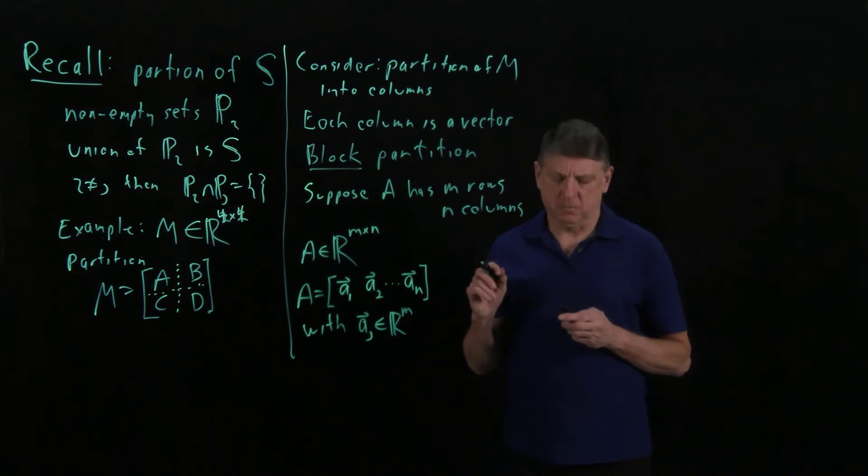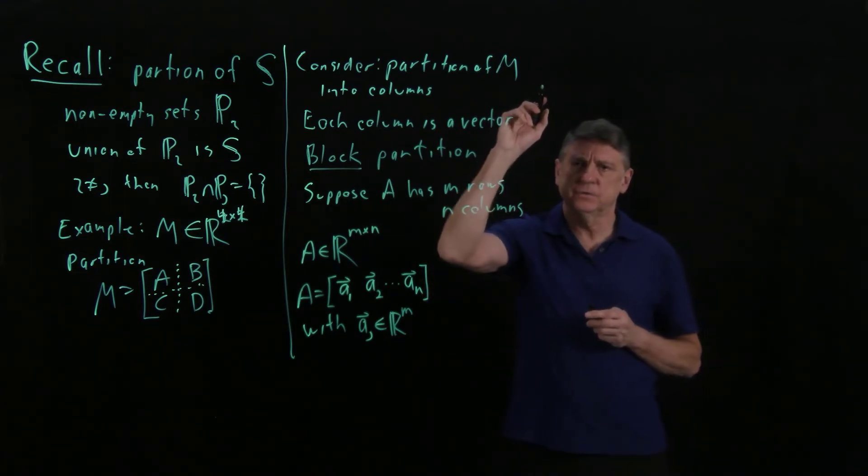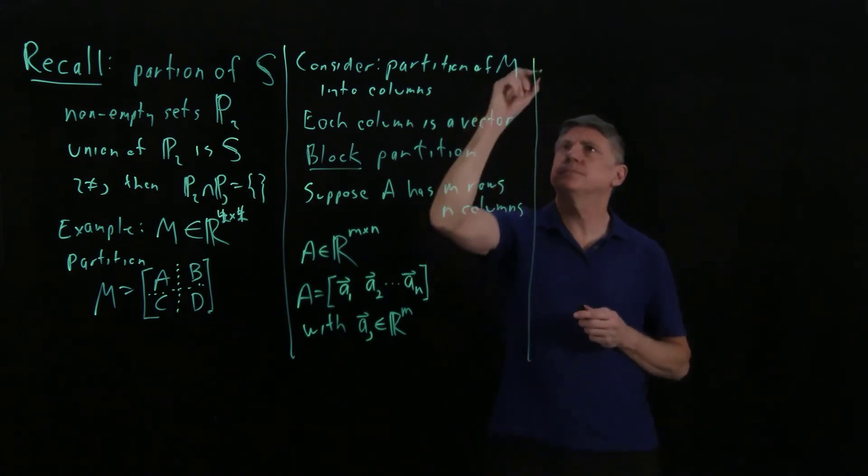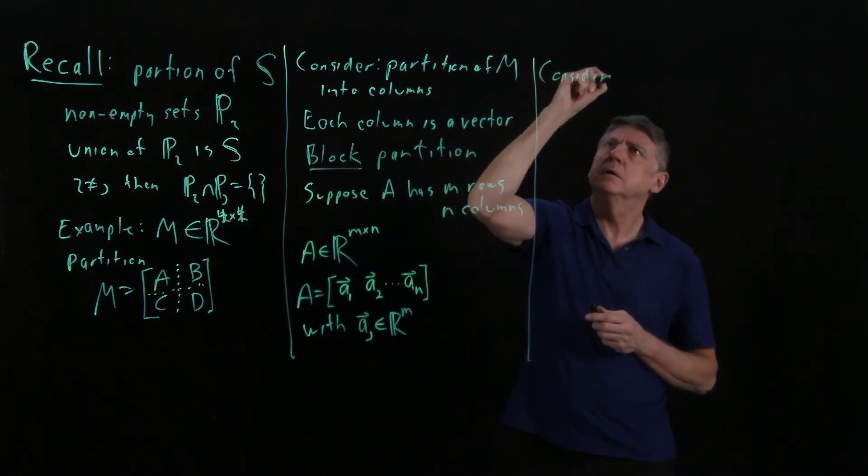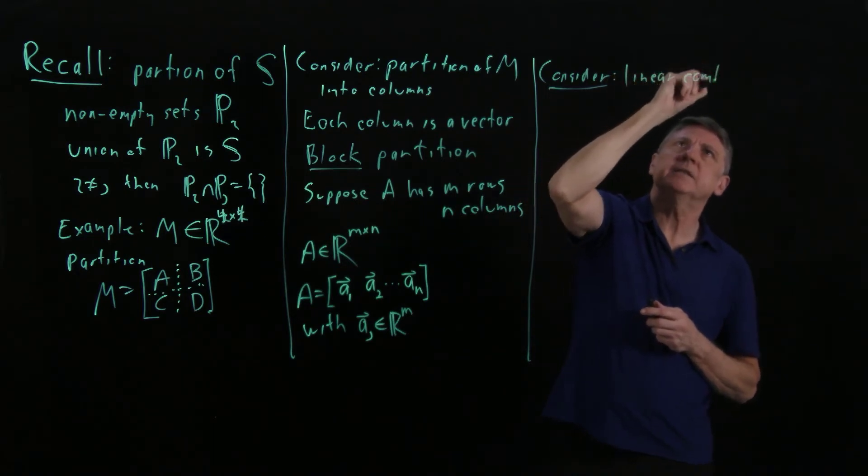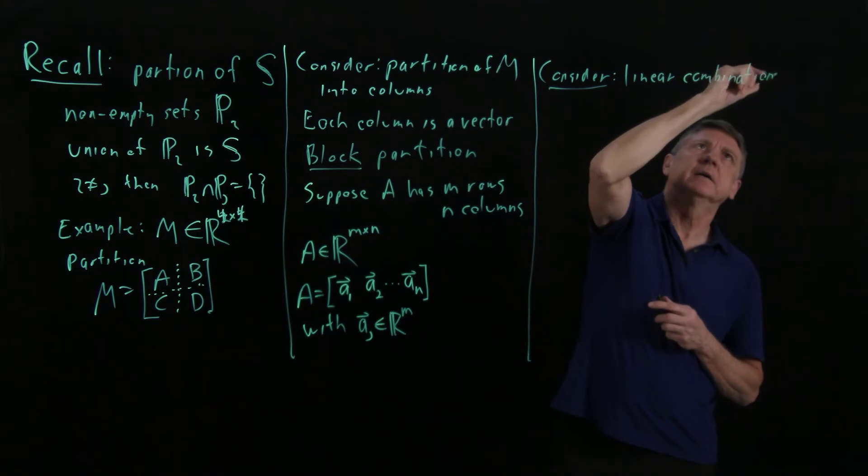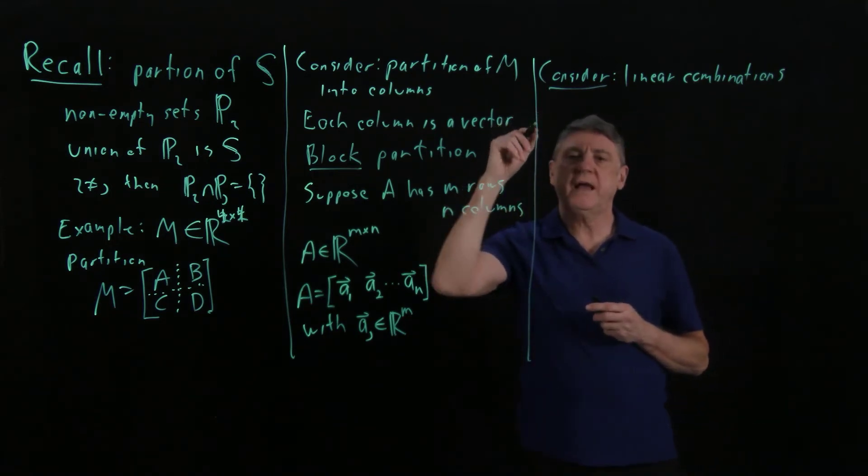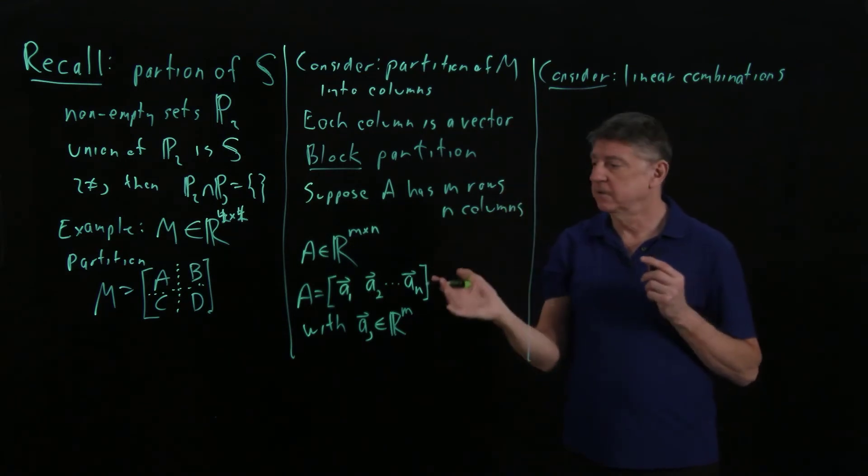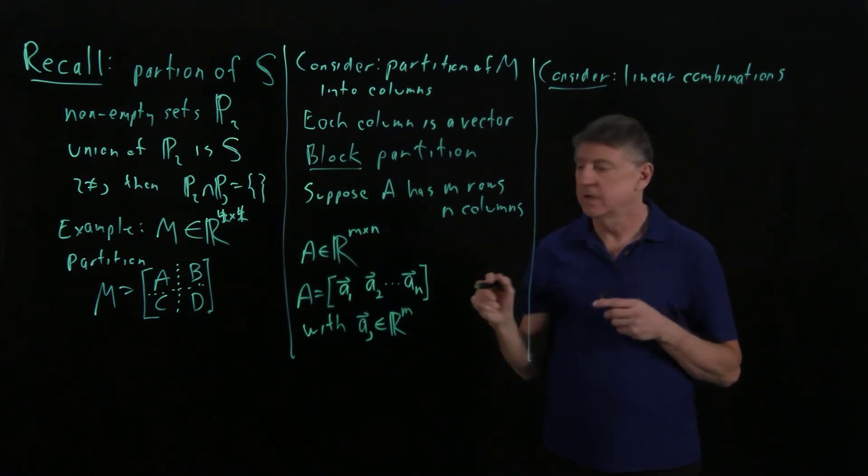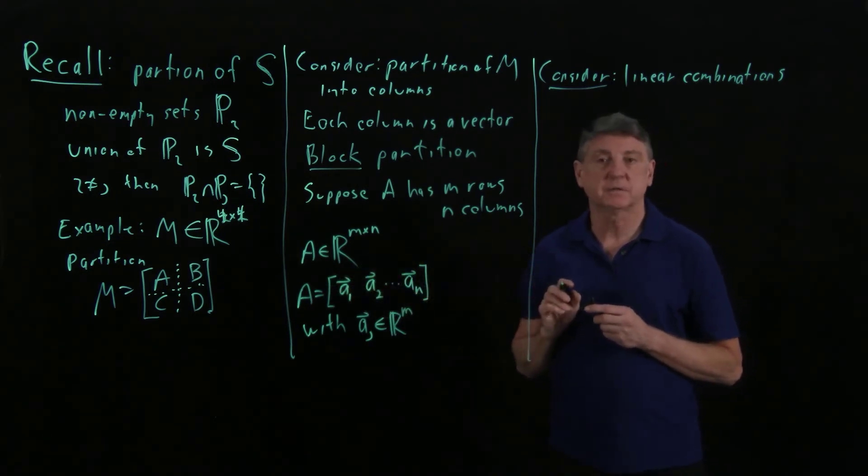Let's now consider linear combinations. And this is a fundamental idea in linear algebra. And what I'll do is I'm going to claim that these have the same result. Suppose we have a bunch of vectors that have M entries in them, and let's suppose we have N of those. So we could gather those into a matrix.